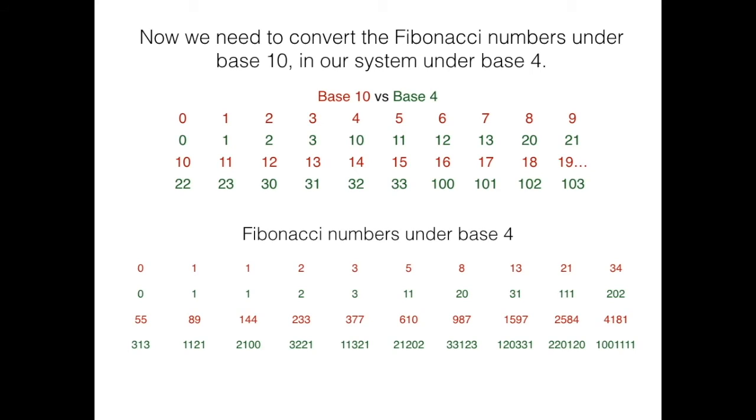Now we need to convert the Fibonacci numbers under the base 10 and our system under base 4. After the 5th element, which is number 3, we move on to the 6th element, which is number 5 under base 10. This corresponds to number 11 under base 4. Then, we have 8, which corresponds to 20, and 13 to 31, and so on and so forth.